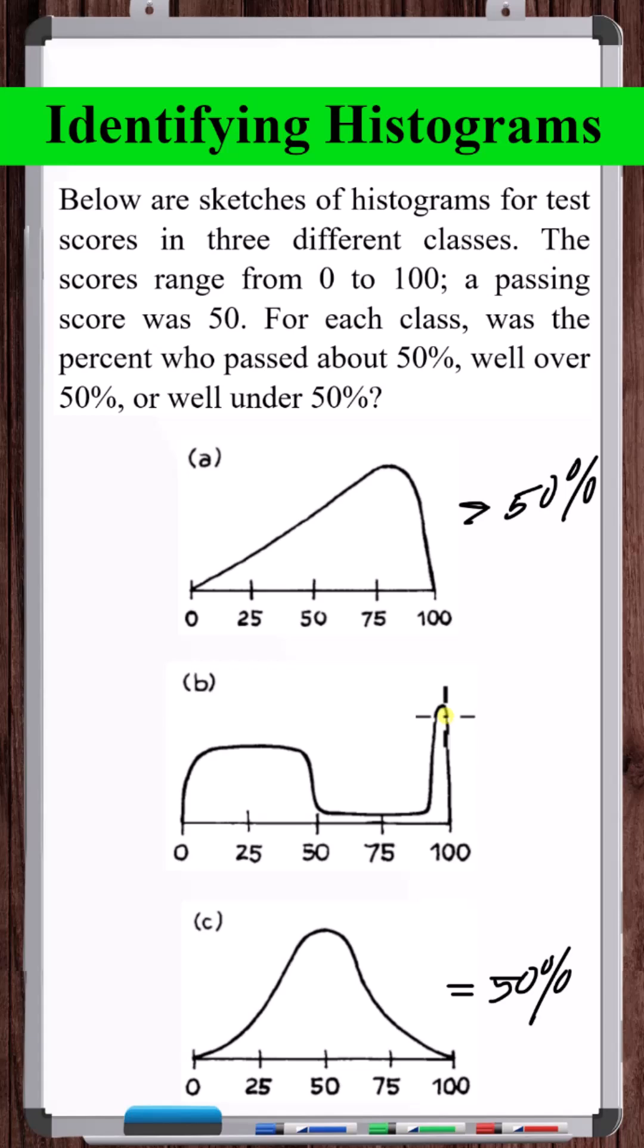Here, you have a group of students who got an A on the test. Not many students at all got a B, C, or D. The majority didn't pass. So the percent who passed in this class is less than 50%.